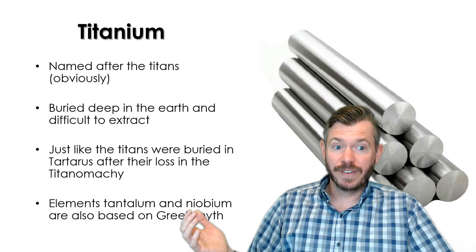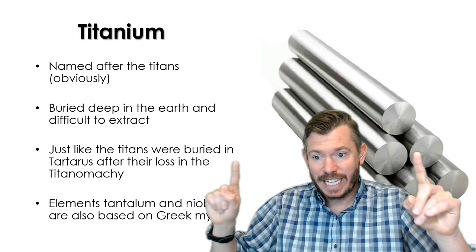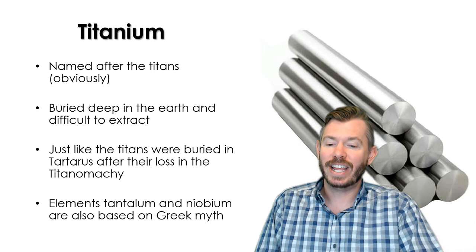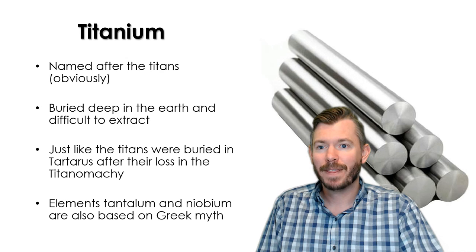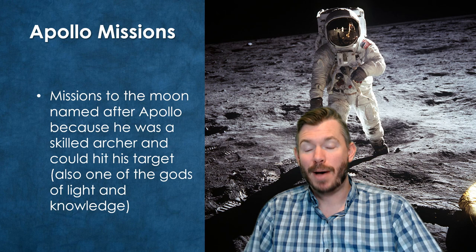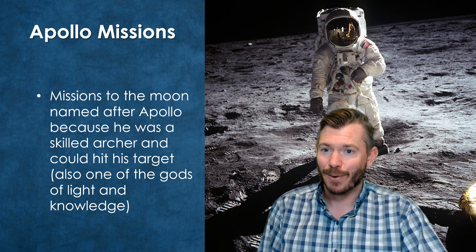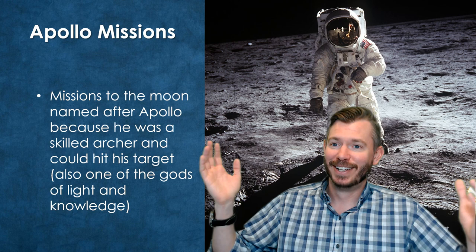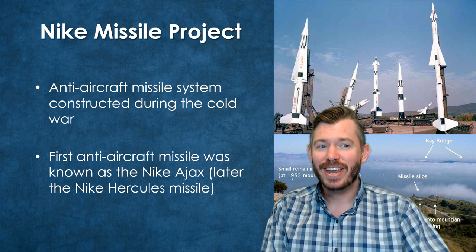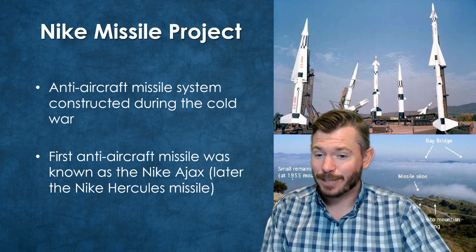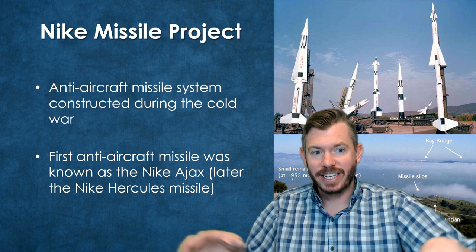In the realm of science we've got titanium, obviously named after the Titans — but also because it's buried deep within the earth and very difficult to extract, just like the Titans are buried deep down in Tartarus. We've also got tantalum after Tantalus and niobium after Niobe. The Apollo missions to the moon are named for Apollo because he was a very skilled archer able to hit his target from very far away — which was kind of the goal of those missions: launch a rocket and have it land on the moon. The Nike Missile Project during the Cold War used the name too — the first was known as the Nike Ajax Missile and later the Nike Hercules Missile. You can still see Nike missile sites around California, built as defenses against any possible invasion from the West.